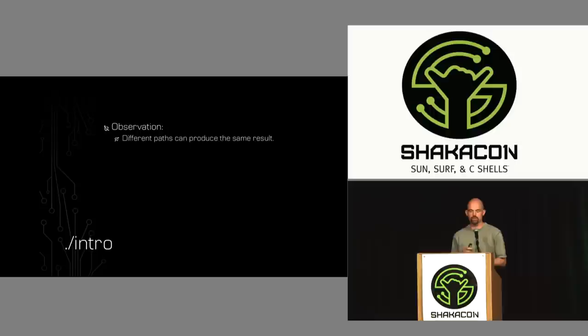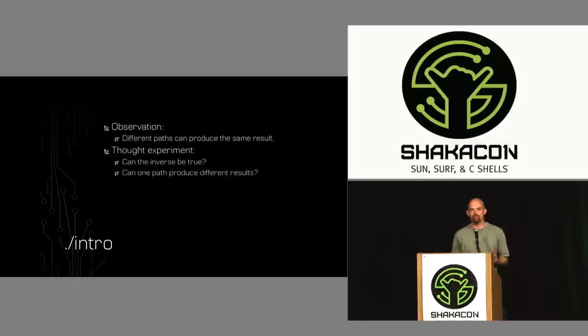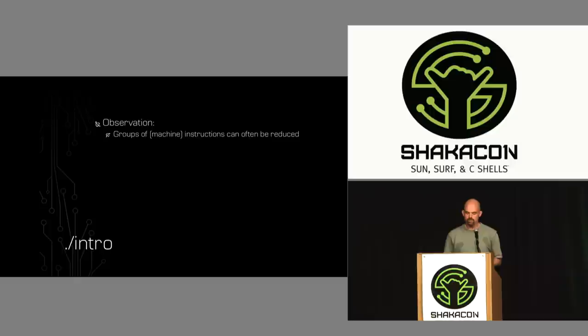I want to frame the rest of the talk with a couple observations and thought experiments. The first observation is sort of an obvious one: different paths can produce the same result. We know that from programming — we can write the same program in two different ways and have it do the exact same thing. But I've had this nagging question: could the inverse of that be true? Could we all take exactly the same path but end up at different places? Just try to keep that in your head throughout the rest of this talk.